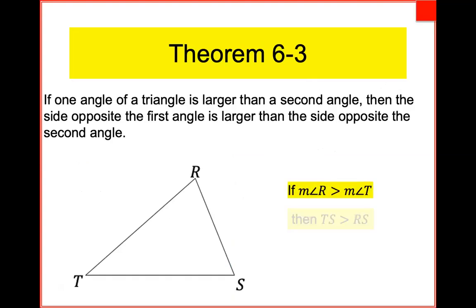We just proved the converse — so this is a biconditional statement. For any triangle except equilateral: the angle opposite the largest side is the biggest angle, or equivalently the side opposite the biggest angle is the biggest side. An isosceles triangle would have one big side and one small side, and this holds for all those cases except equilateral.